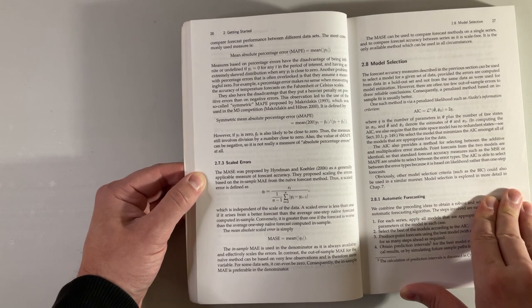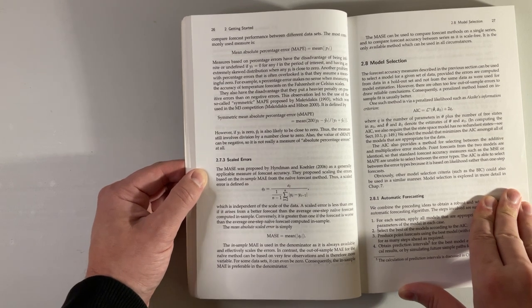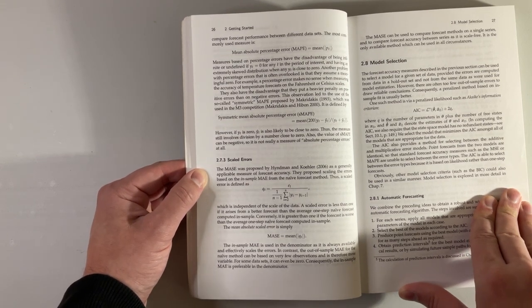I like this section on MASE, which is mean absolute scaled error. It is clear that this is an important metric for modern forecasting.